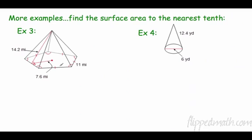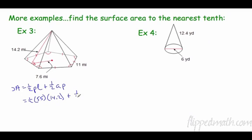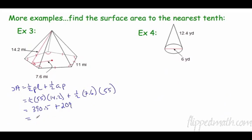Let's try the practice examples. For the pentagonal pyramid, surface area equals one-half times perimeter times slant height plus one-half times apothem times perimeter. The perimeter is 5 sides times 11 = 55. Slant height is 14.2, and apothem is 7.6. This gives 390.5 + 209 = 599.5 miles squared, rounded to the nearest tenth.